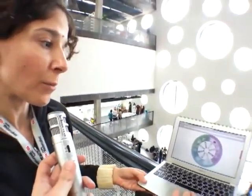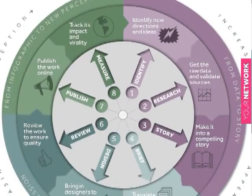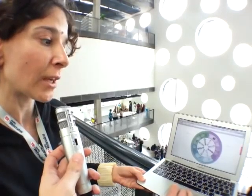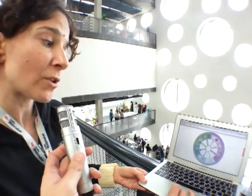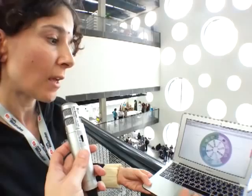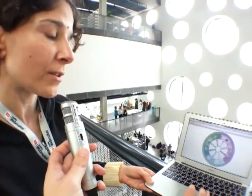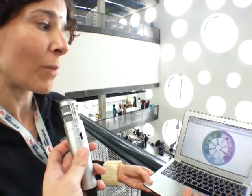This is a diagram of our process — it's a three-part process. First we start with research: identifying a topic, then researching it, and then turning it into a story. Then we visualize it, so here it turns from numbers and text into visual media. And then the part that this session at Mozilla Fest was focused on was the publishing and tracking.